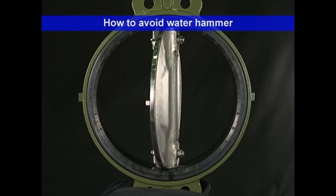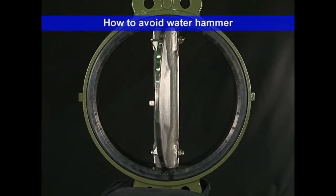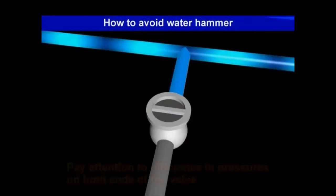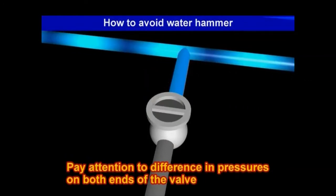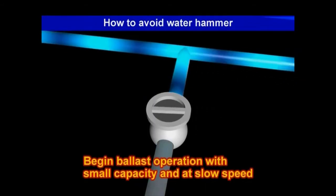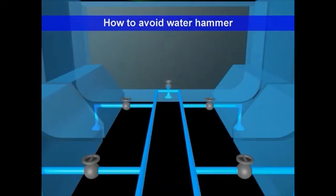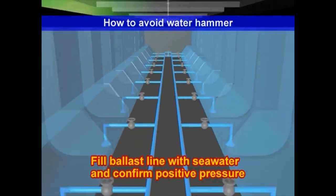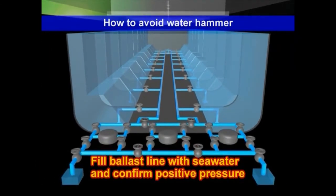In addition, general points to remember for avoiding water hammer are as follows. Pay attention to the difference in pressures at both ends of the valve. Begin ballast operation with a small capacity and at a slow speed. Fill the ballast line with sea water and confirm that the line has positive pressure.